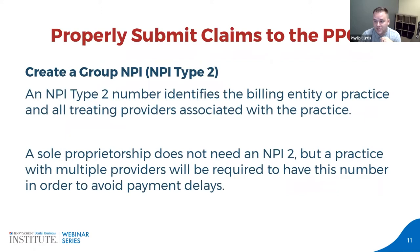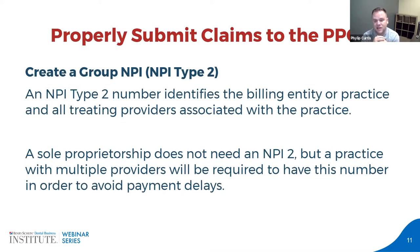Properly submitting claims also involves understanding a group NPI number. An NPI Type 2 number identifies the billing entity or the practice and all the treating providers associated with that practice, and it applies to some specific insurance companies. If you're a sole proprietorship with a single owner, you don't need an NPI Type 2. But any practice with multiple providers will be required to have this number in order to avoid payment delays with most insurance companies.